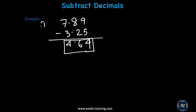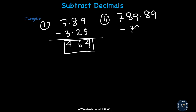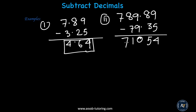Let me give you another problem: 789.89 minus 79.35. Subtract it: 9 minus 5 is 4. 8 minus 3 is 5. 9 minus 9 is 0. 8 minus 7 is 1. The answer is 710.54.